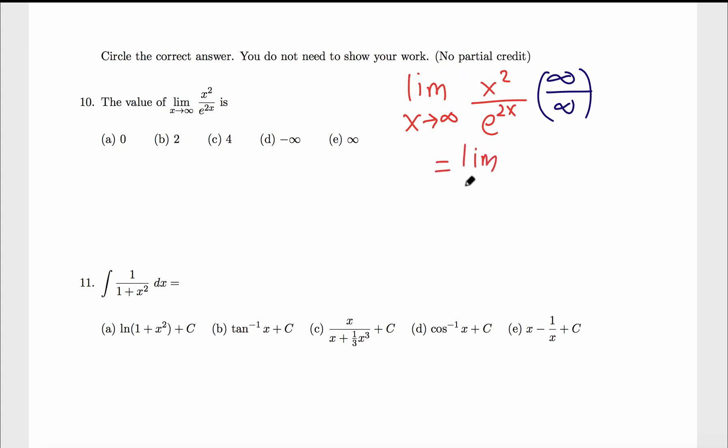In that case, we find the derivative of top on the top and derivative of bottom on the bottom. E raised to 2x exponential function itself times derivative of inner function 2x, that's 2. We can write 2 in the front. The 2x and 2 cancel. If we plug in infinity, we still have infinity over e raised to infinity, which is also infinity. So let's do L'Hopital one more time.